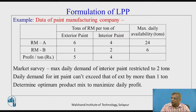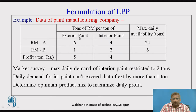Let us consider one example. This is the data for one manufacturing industry which manufactures two types of paints — it is a paint manufacturing company. You really need to understand the data given. In this table, there are two rows: RMA and RMB, which are raw material A and raw material B. The next row gives profit per ton in rupees, with units of 5 and 4 in the table.